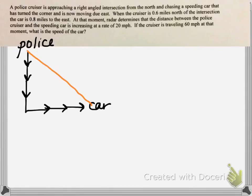If the cruiser is traveling 60 miles an hour at that moment, what is the speed of the car? We have our diagram — now we want to label it. We have a lot of quantities that are changing. The intersection is this dot. The distance between the policeman and the intersection is changing, so I'll label that x. The car is also moving away from the intersection, so that distance is labeled y — also changing. The distance physically between the policeman and the car is also changing, and I'll call that z. So we have three sides of a right triangle, all of which are changing.